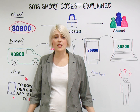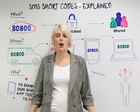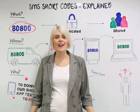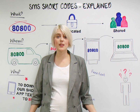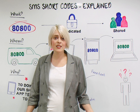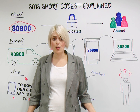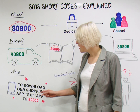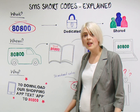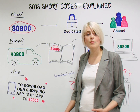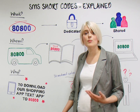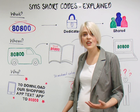So why would your business look to use shortcodes as a customer relations marketing tool? SMS shortcodes are an excellent mechanism by which your customers can request more information, request a call back, donate to charity, or vote. In this instance on the board, to download our shopping app, text APP to 80800 — this might appear in a magazine. The consumer would text the number and receive a URL back, which will direct them to a website where they can directly download the application.